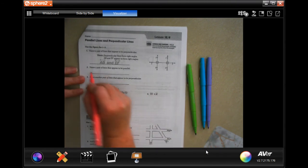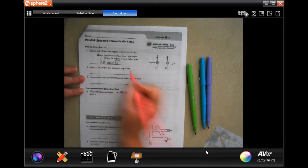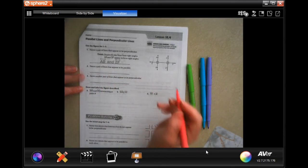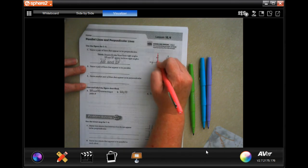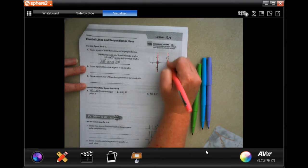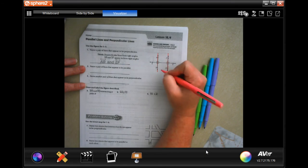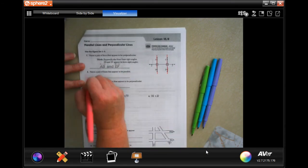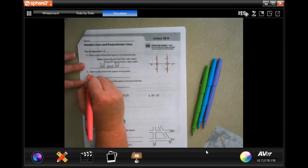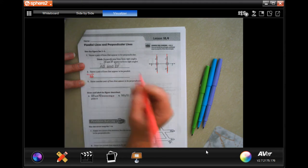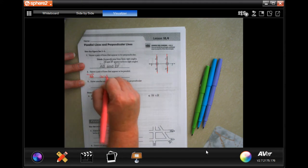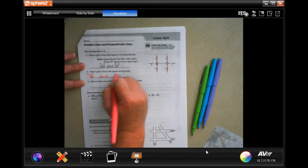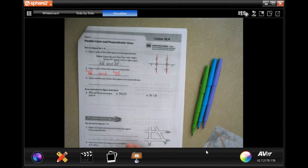I want to name a pair of lines that appear to be parallel. Parallel lines will never touch. There's one, and there's one, and together they are parallel because they will never touch. So we're going to have line AB, and they have arrows on the end, so we need to put a line that has those two arrows, and BD, same thing.